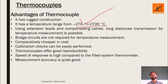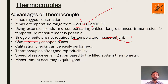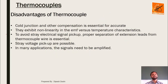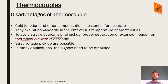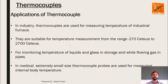Advantages of thermocouples: rugged construction. Temperature range from -270°C to 2700°C, which is much higher than thermistors. Long distance temperature measurement is possible using extension leads and compensating cables. No bridge circuit is needed. Cheaper cost and easy calibration checks. Speed of response is higher than a system thermometer, and measurement accuracy is quite good. Disadvantages: cold junction compensation is essential for accuracy; they exhibit non-linearity in EMF versus temperature characteristics; proper separation of extension leads is essential to avoid stray signals; and in many applications the signal needs to be amplified.